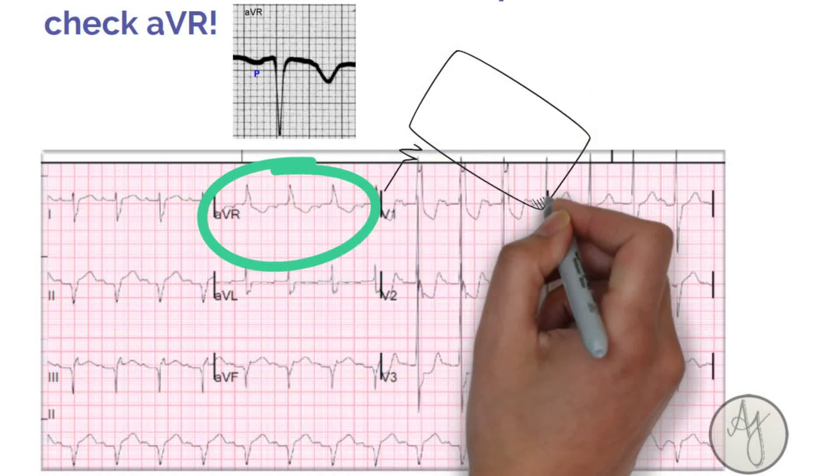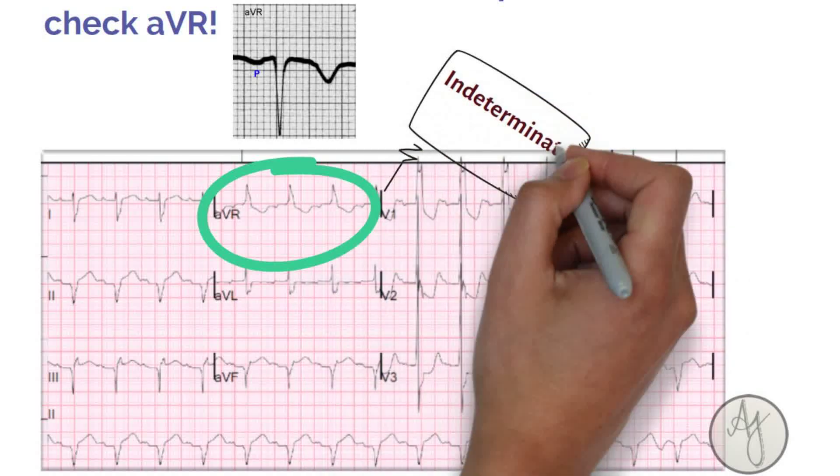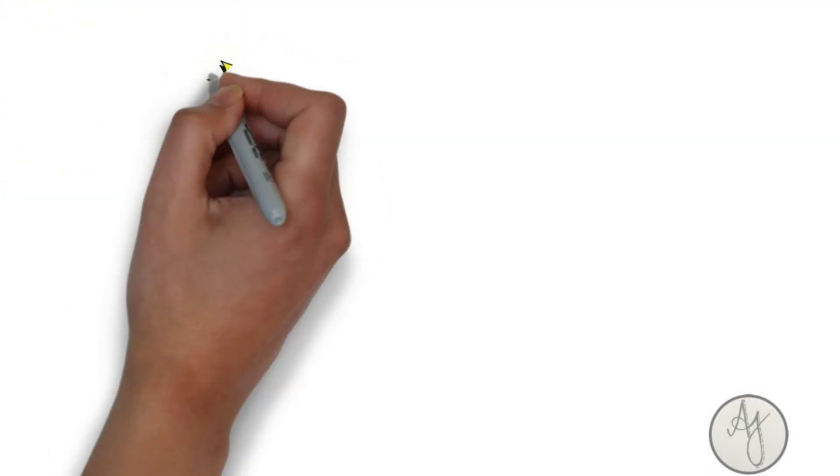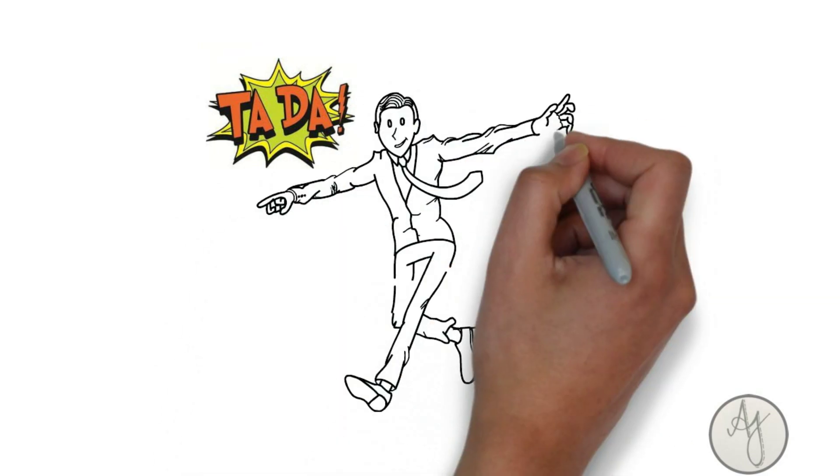So if QRS is positive, that means something is wrong. And if that occurs, it's an indeterminate axis. And that's it, that's all the axis is.